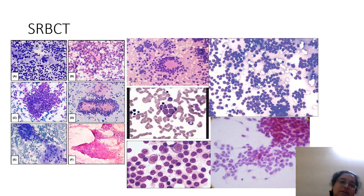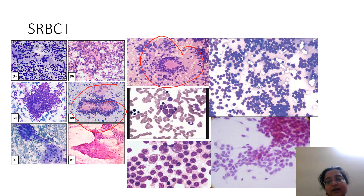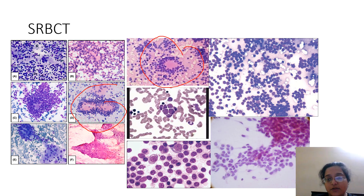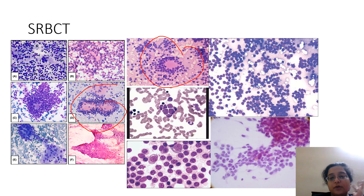Rosettes are very important, as seen here. Location is a big hint — if it's a CNS tumor, think medulloblastoma; if it's an abdominal mass on adrenals, think neuroblastoma. But if it's a mediastinal mass, it can be a spectrum of things from germ cell to lymphomas to metastasis to extraskeletal PNETs.